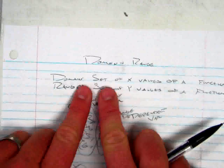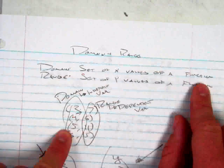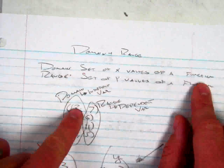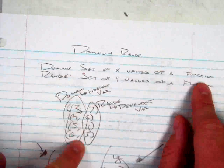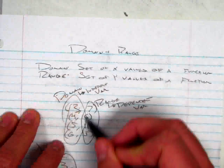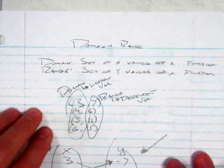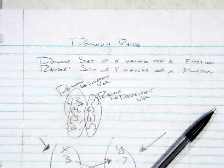So in a nutshell, domain is the set of x values of a function. All the x values that you can have. It's not any one, but it's all of them as a group. And a range is all the y values that you can have. All the y values, as we've seen in our problems. And that's all I got.